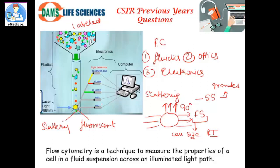The forward scattering collector captures light at the same angle as the laser, while the side scattering collector captures light deflected by 90 degrees. You also have specific detectors for fluorescent dyes — one for FITC, one for phycoerythrin (PE), and so on. So you can measure both scattering and fluorescence.